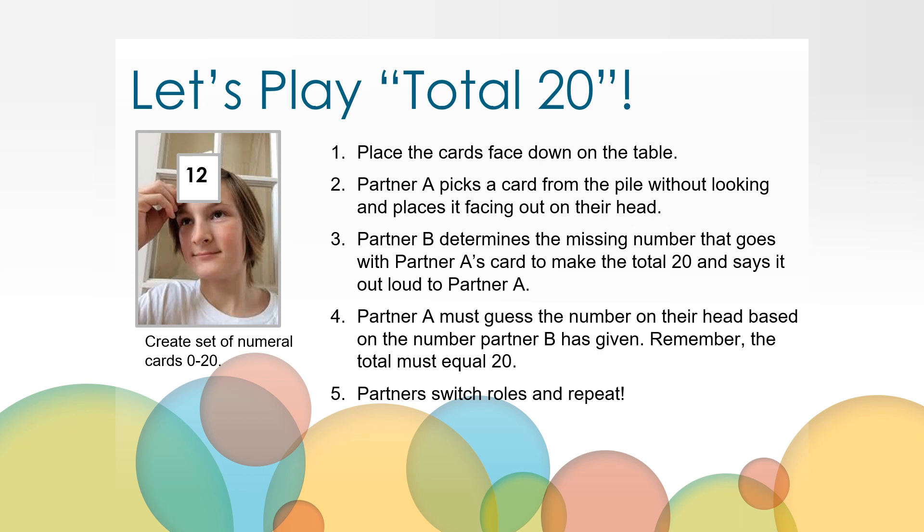So, for example, in this picture, partner A has picked up a card and placed it on his head. He doesn't know what the number is, but partner B sees it and thinks to themselves, hmm, what goes with 12 to make 20? Hmm, I can count up 12, 13, 14, 15, 16, 17, 18, 19, 20. That's 8. 8 goes with your number to make 20. So, then partner A has to think, hmm, if I have the number 8, what would be on my head to go with 8 to make 20? 20 minus 8 is 12. So, partner A successfully would say, my card must be 12.